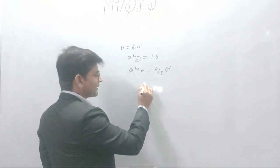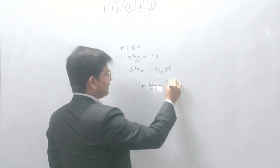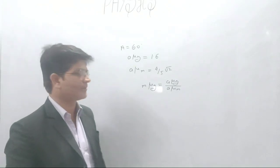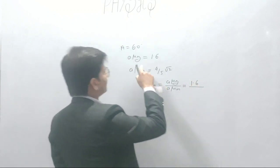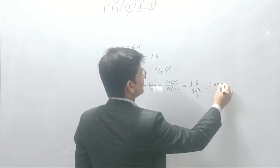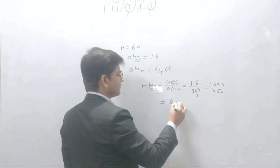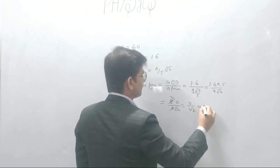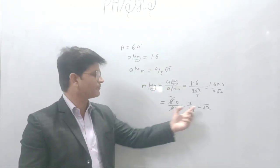The refractive index of glass with respect to the medium is given by the refractive index of glass divided by the refractive index of the medium. So mu_g in air is 1.6 and the medium index is 4 by 5 root 2. Calculating: 1.6 × 5 divided by 4 root 2 gives 8 divided by 4 root 2, which equals 2 upon root 2, that is root 2. So the refractive index of the material of the prism with respect to the medium is root 2.